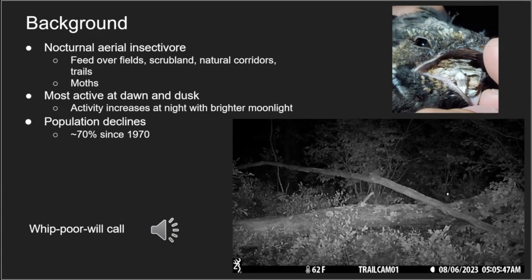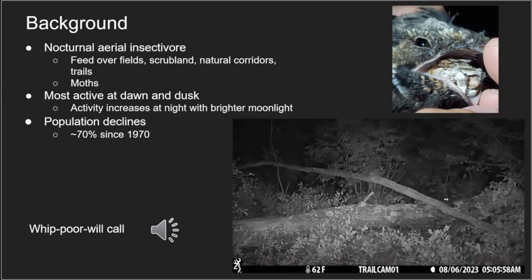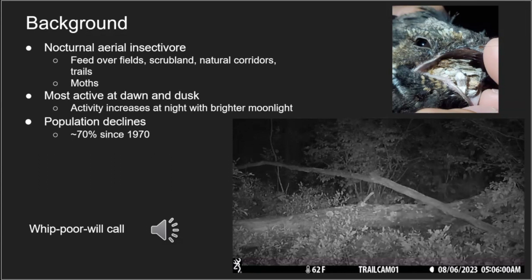Here is a video — you're hearing a Whippoorwill's call, which is how they get their name. In this video you'll see what we call sallying behavior. They don't feed on the wing like a swallow. They sort of sit on a perch — they are visual predators who wait to see a bug flying by. Once they see something, they'll go up, grab it with their big mouth, return to the perch, and continue to do this as they feed.